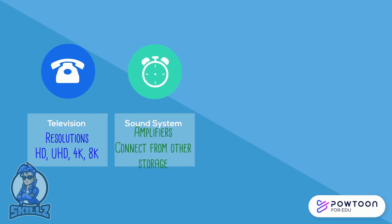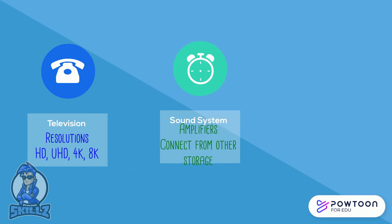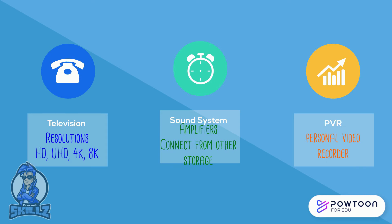Next is the sound system, which can produce loud, rich sounds using high quality speakers or amplifiers. Some systems can play from CDs, smartphones, USB, or Bluetooth. Personal video recorders are a device that records broadcasted content so that you can watch it later.